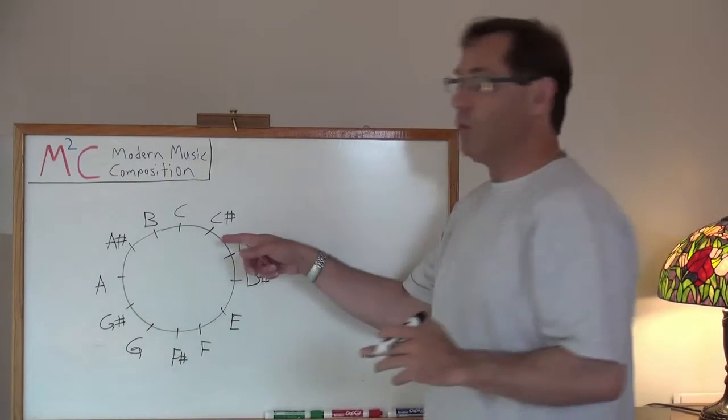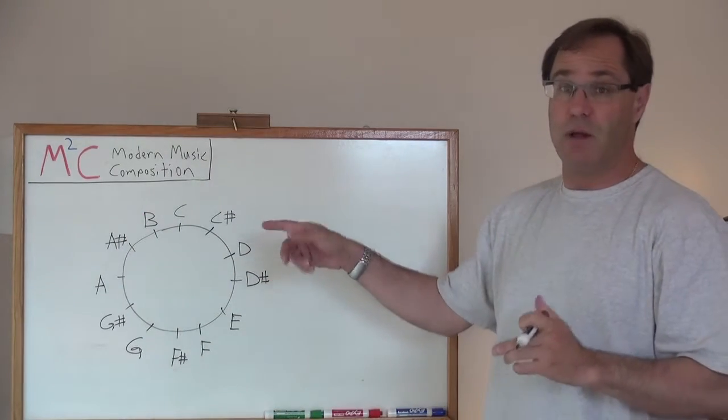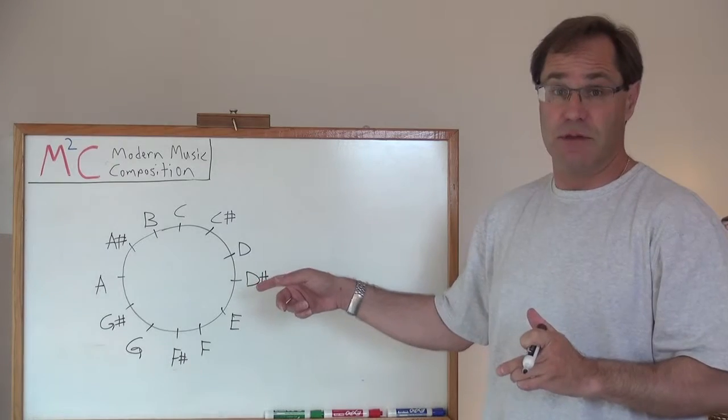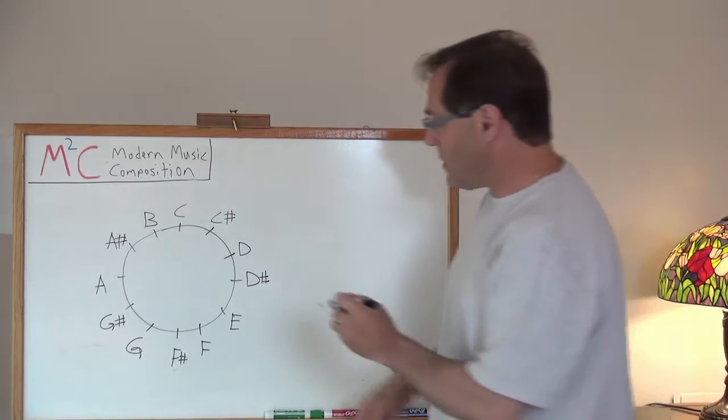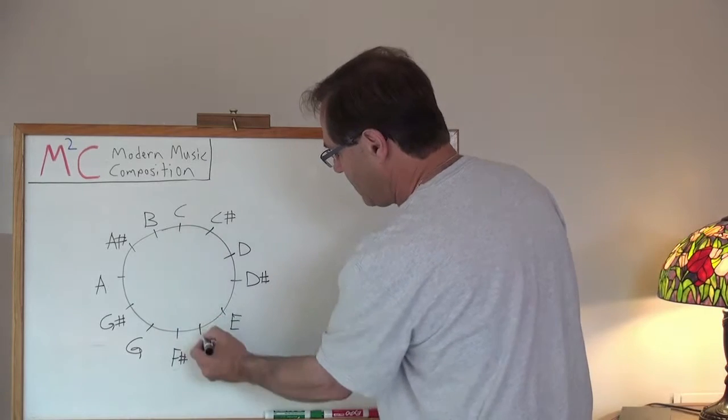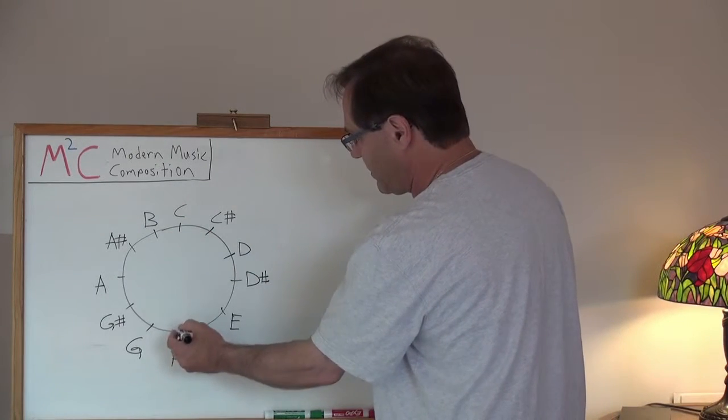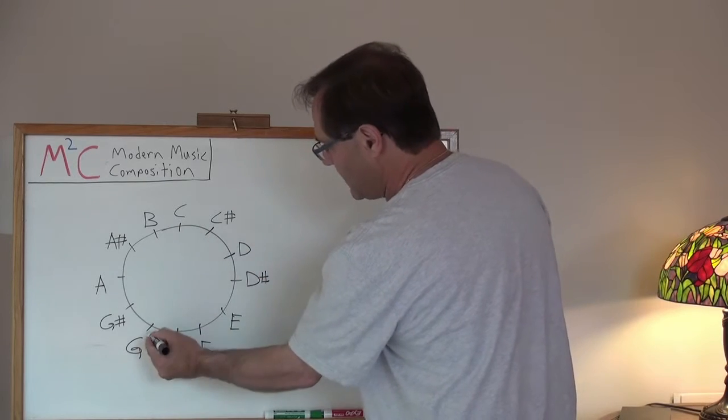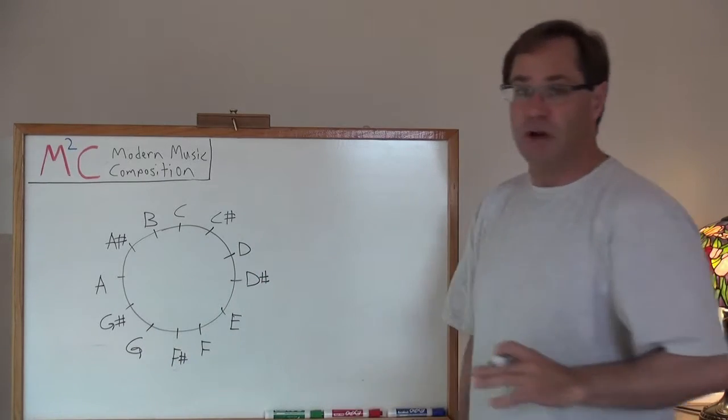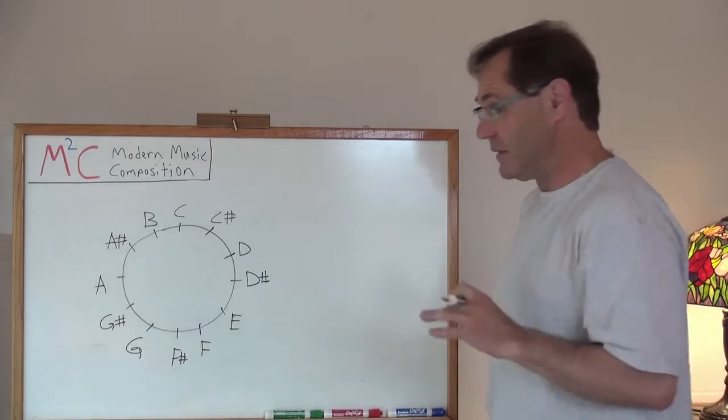This is actually a really cool way to find relative tritones, pairs. Remember how we were talking about B and F? Well, they're just straight across from one another. C and F sharp. C sharp and G. So those are all tritones. Just a little divergence there.